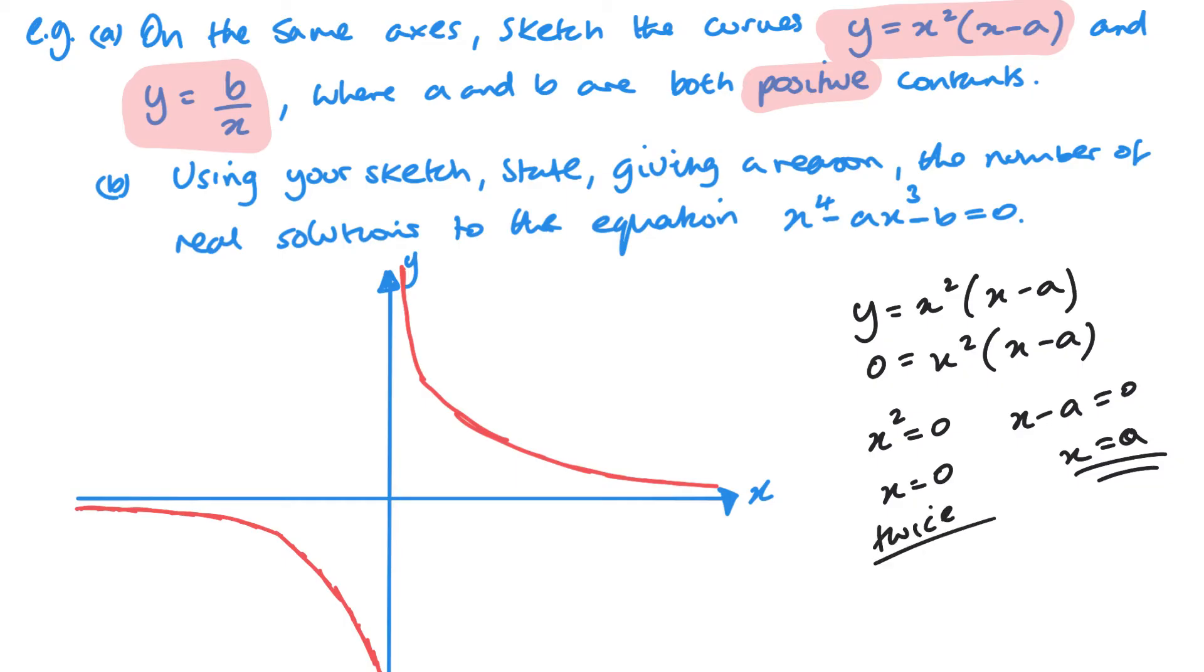And remember, I like to put in that word twice there, just to remind me. So it's going to bounce off the axis at 0, 0. And it's going to cross the x axis at a. And remember that a is a positive constant. So I can just mark that somewhere on this side as a positive value of x.